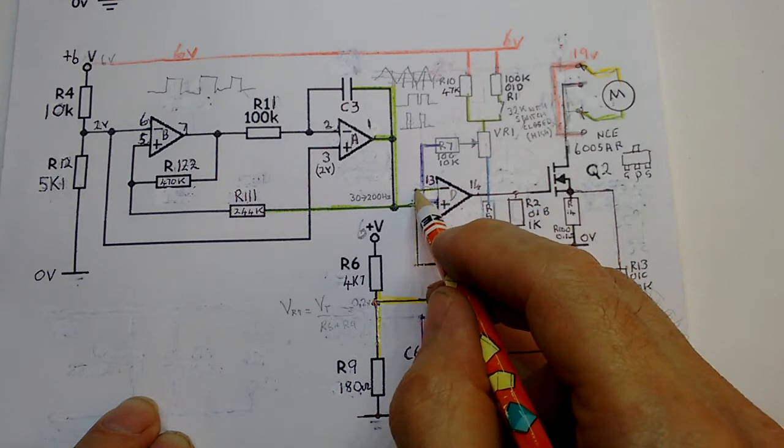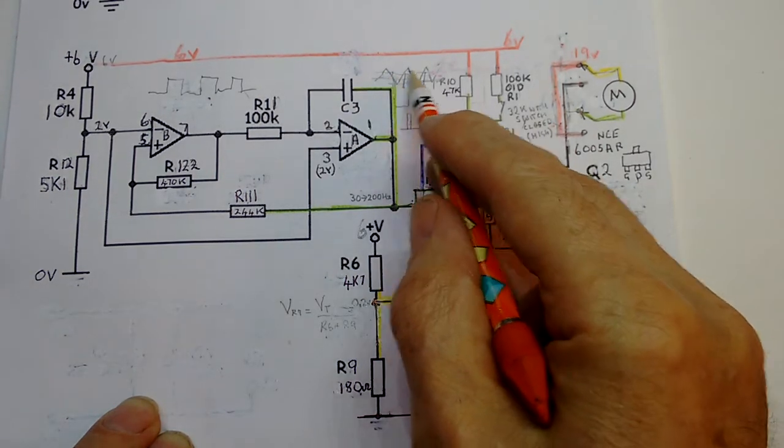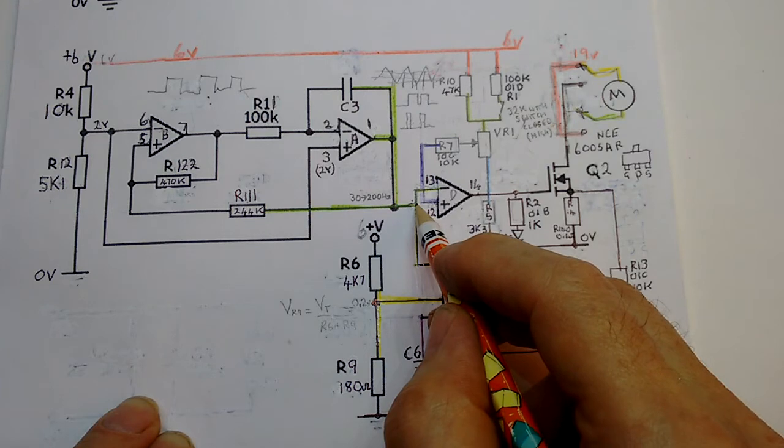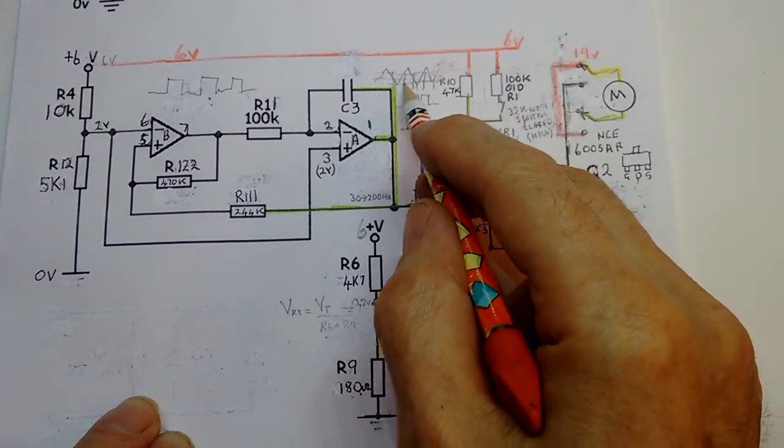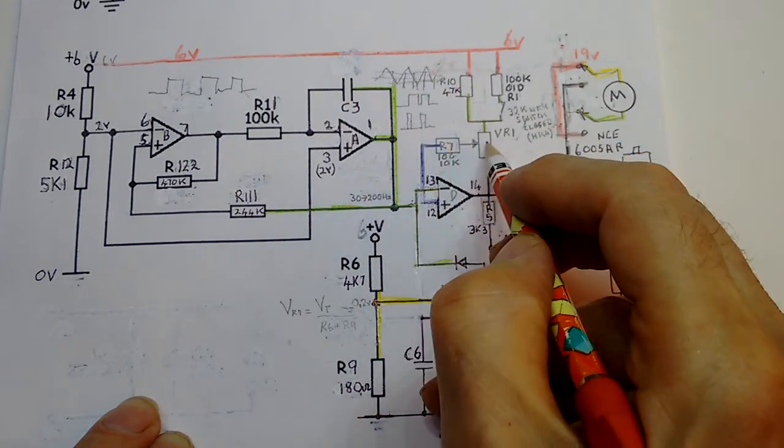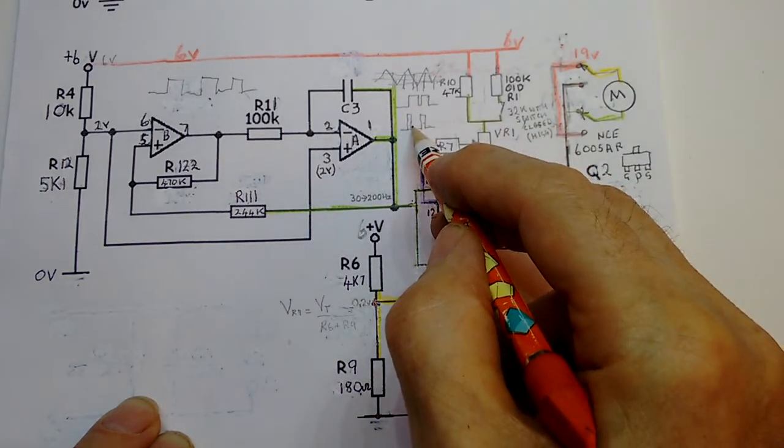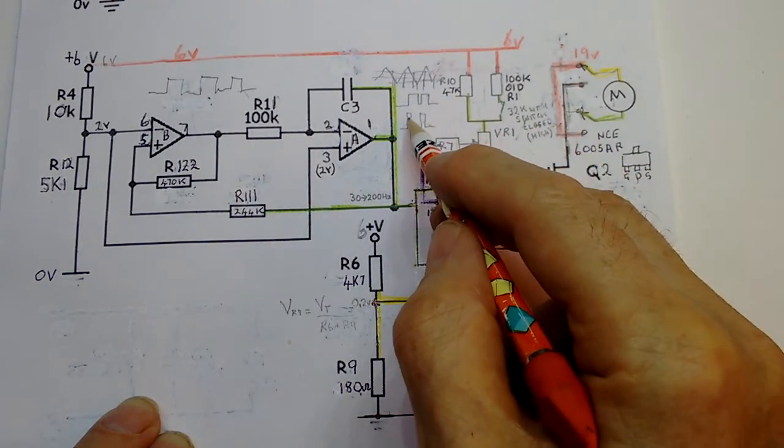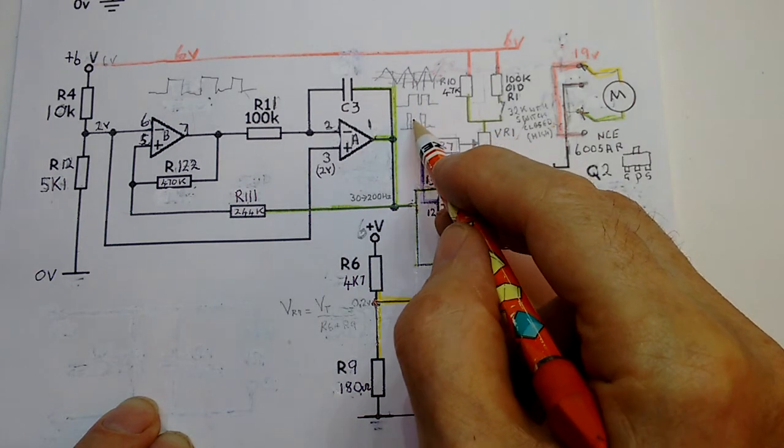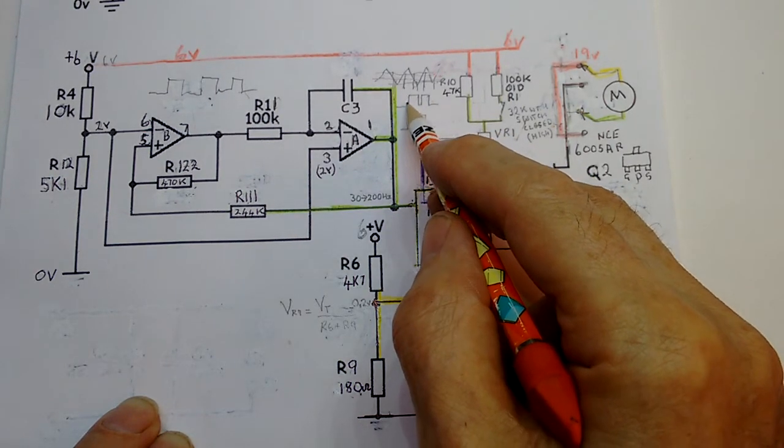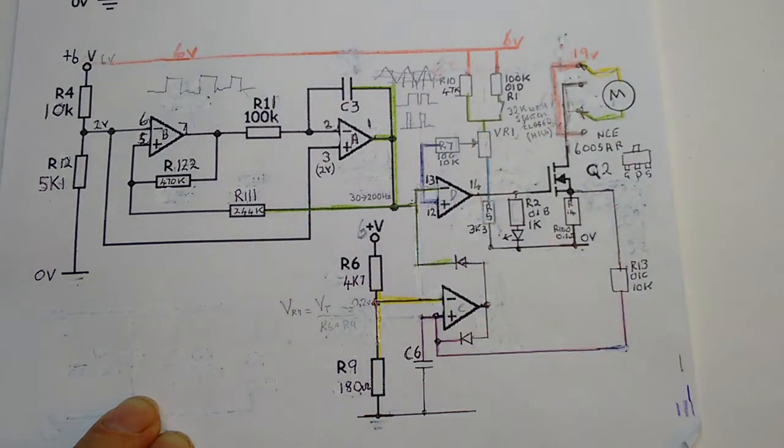And this other input here is the triangular wave. So we've got a triangular wave coming in here, the voltage from the variable resistor coming in here, and that then gives us the different peaks coming out - slow narrow peak, large wide peak.